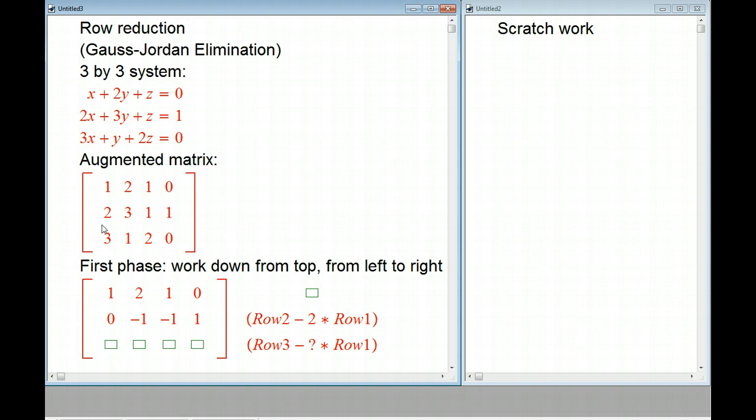Now, for row three, we want to kill this three. We're going to take row three and subtract three times row one. So that's going to be a zero by design. Now we're going to take one minus three times two, one minus six is minus five. We're going to take two minus three times row one, two minus three is minus one. And here's zero minus three times zero is just zero.